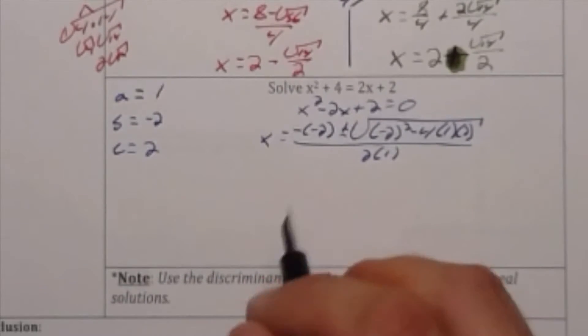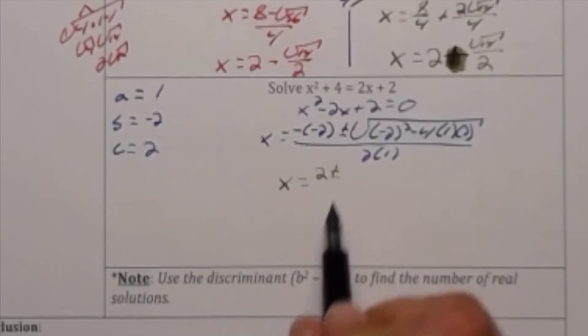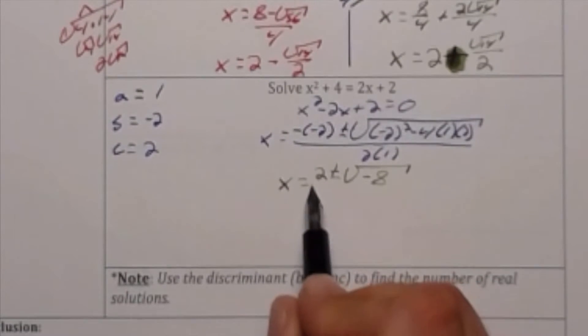When I simplify what is inside my radical, I will get x is equal to 2 plus or minus the square root of negative 8 all divided by 2.